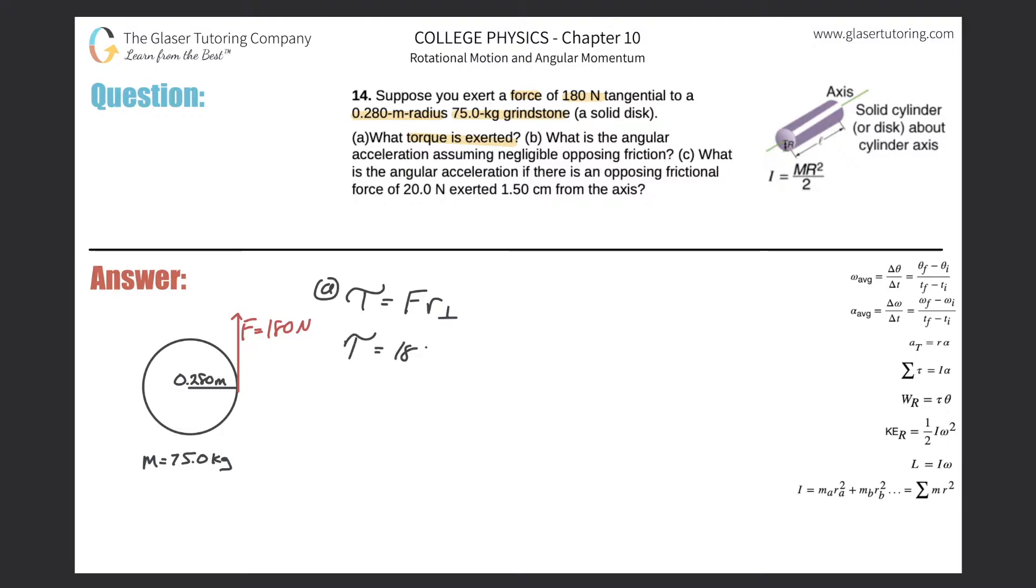So I have all the variables I need. This one's really straightforward. It's 180 multiplied by 0.280. What do we get for the torque here? We get 180 times 0.28, which is 50.4 newton meters. So that takes care of letter A.